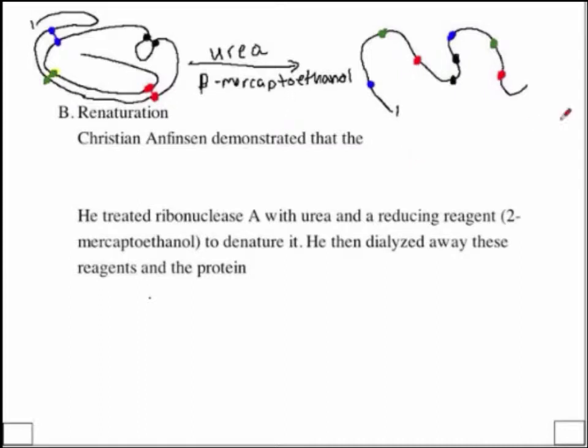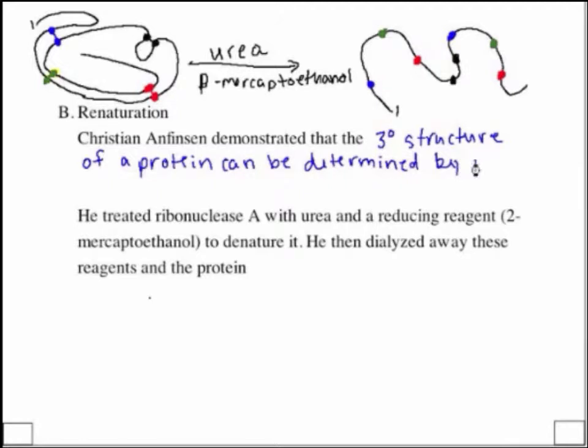This was absolutely phenomenal. So I don't say this lightly. When I write down that Christian Anfinsen demonstrated that the tertiary structure of a protein can be determined by its primary structure. This is phenomenal. This means that the sequence, the primary structure, the amino acid sequence, is what dictates the folding of a protein. So we can say sequence specifies conformation. This is a fantastic finding and certainly a landmark finding.